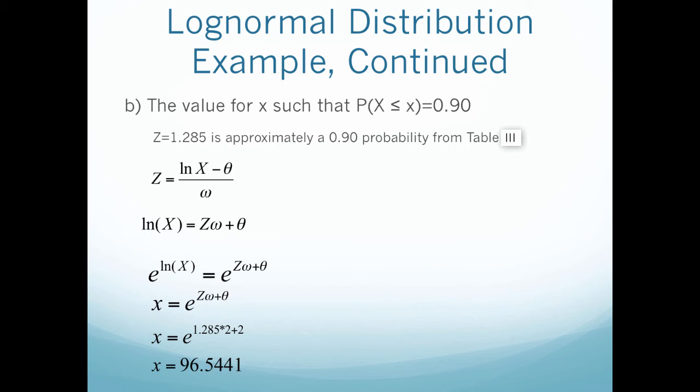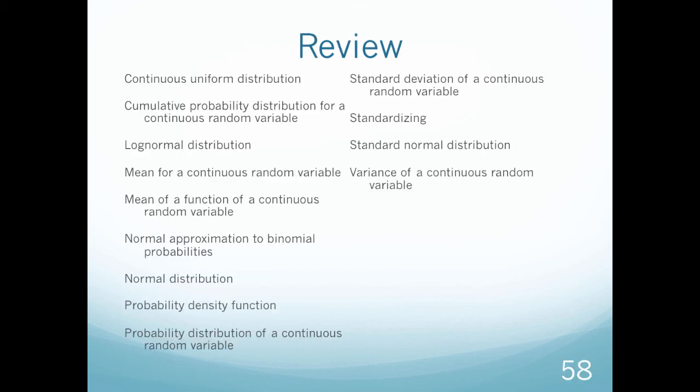A way to look at it is 96.5 is x being less than that value equals 90 percent. Or there is a 90 percent probability that x will be less than or equal to 96.5. This concludes our lectures for chapter 4.